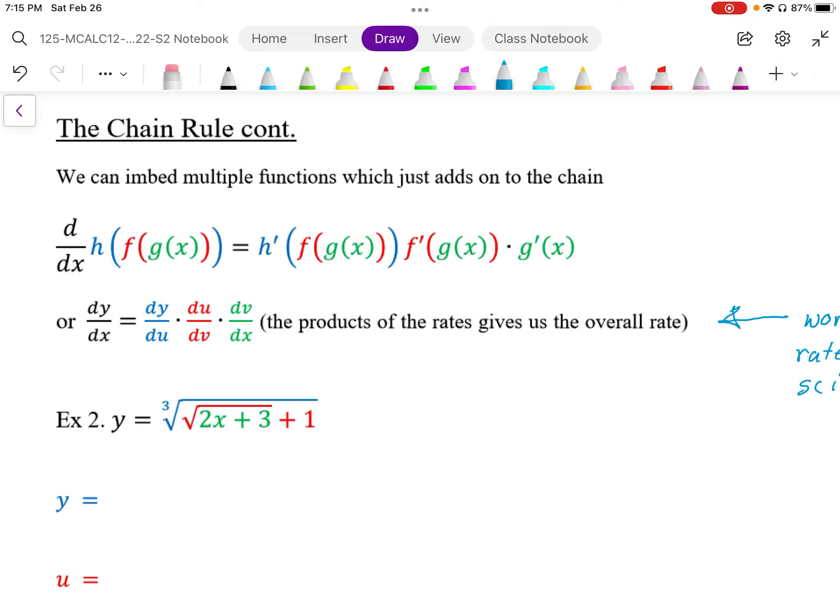The chain rule is used when we have embedded functions, essentially when the outside function is dependent on the inside function. Basically what happens is we multiply the derivatives of the outside to inside function.